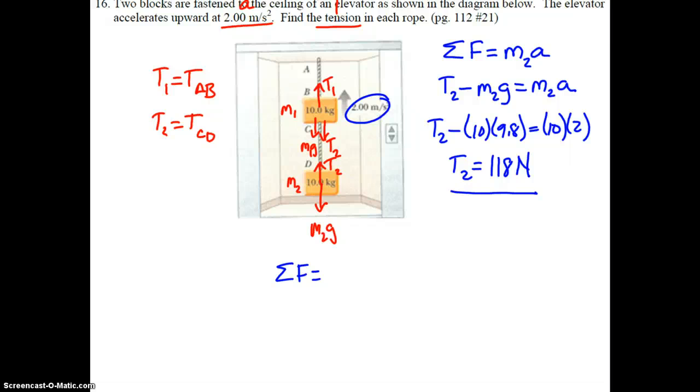This is a whole system's approach to solving for this top tension in rope AB. We're going to say sigma F equals m1 plus m2 times a. Why? Because that top rope not only supports mass m1, it also is supporting mass m2.